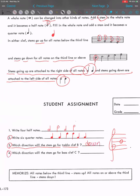Number four, which direction will the stem go for bass clef C? If it's in bass clef, where is C? Bass clef, the C will be right here on the second space. Now, if it's lower than the third line, the stem's going to go up. So the answer is up.